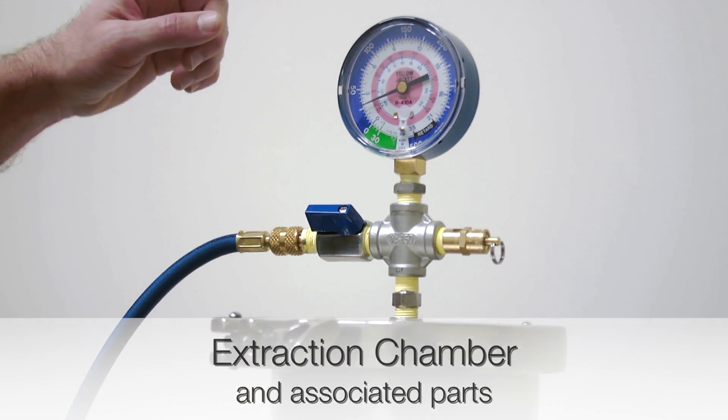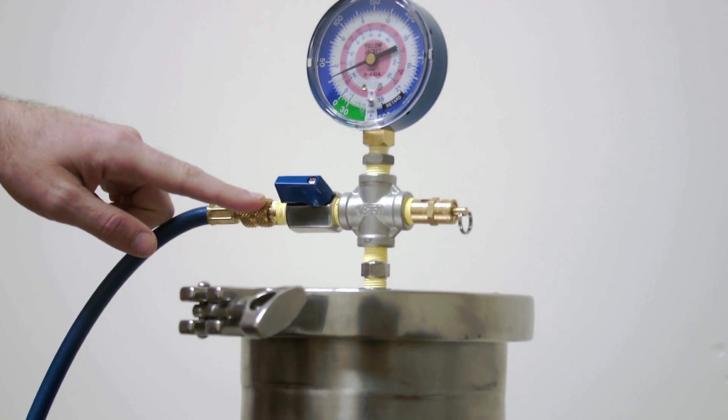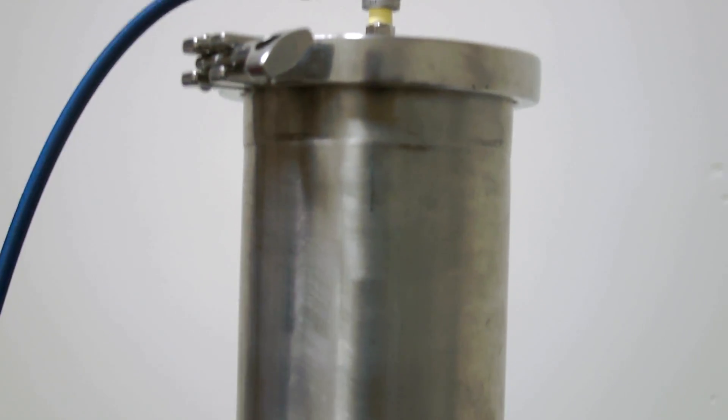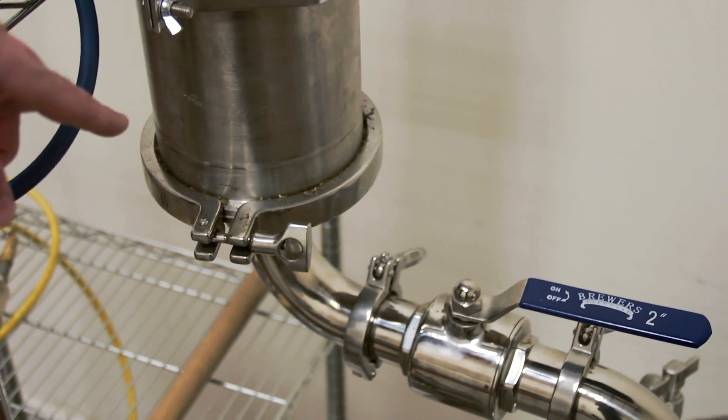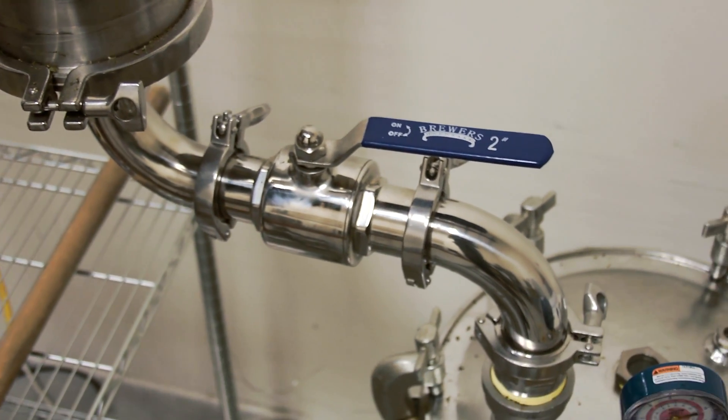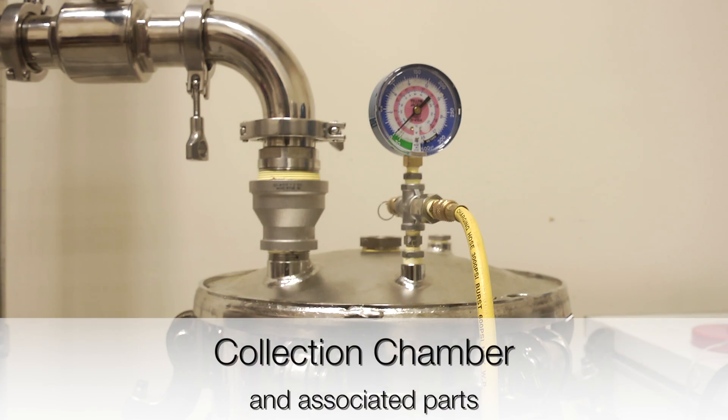So there's a pressure gauge, a quarter inch ball valve, pressure relief valve, six inch tri-clamp, six inch pipe clamp, two inch ball valve, and two inch tri-clamps connecting it to the collection chamber.